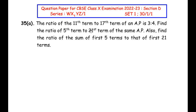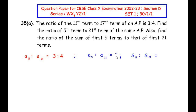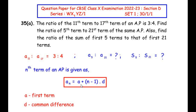Let us write down the given data. The ratio of the 11th term to the 17th term is 3:4. We need to find the ratio of the fifth term to the 21st term, and also the ratio of the sum of the first five terms to that of the first 21 terms. We will make use of the nth term formula: a_n = a + (n-1)d, where a is the first term and d is the common difference.